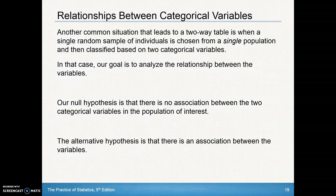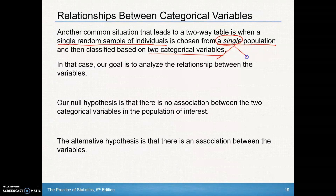Another common situation that leads to a two-way table is when a single random sample of individuals is chosen from a single population and then classified based on two categorical variables. In other words, we take this simple random sample from one population and split it up into two different groups — we didn't take two samples from two separate populations.